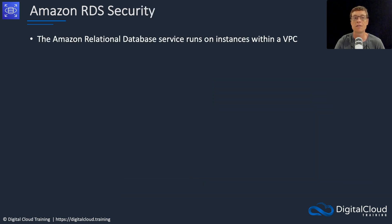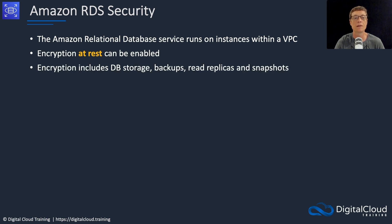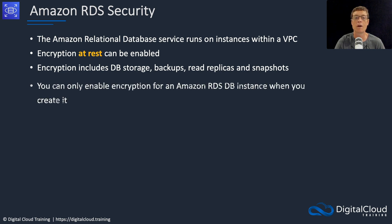Moving on to RDS — the Amazon Relational Database Service — it runs on EC2 instances within a VPC. Encryption at rest can be enabled. RDS also uses EBS volumes for storing its data. When you enable encryption at rest, that will include DB storage, the backups, the read replicas that you create from your database, and any snapshots you take of your main database or your read replicas.